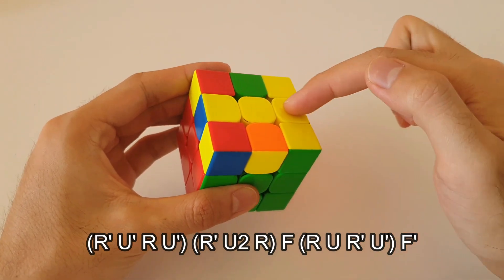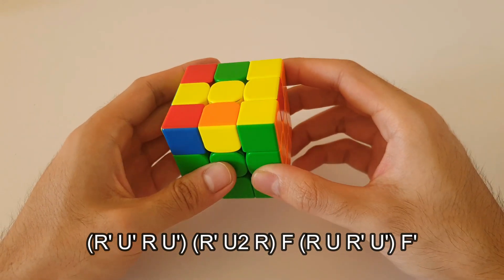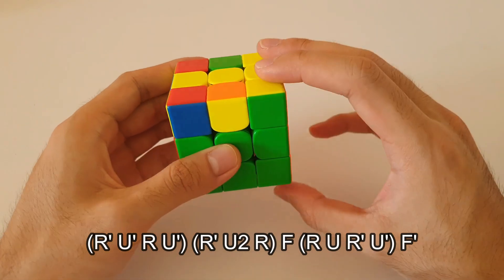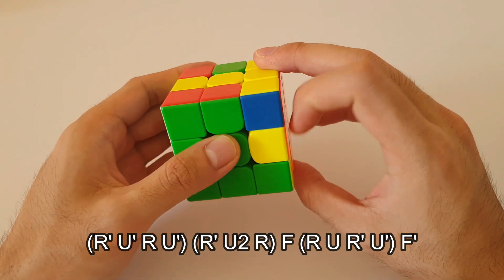That, once again, leaves us with a T-shaped OLL case on the top layer, which we can solve with our right hand from the front like this.